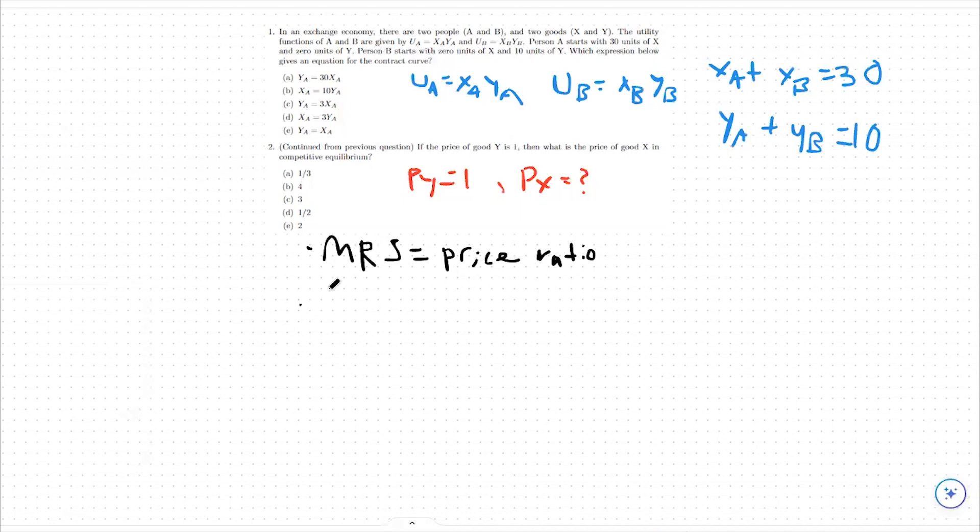So first, we're going to say our MRS for person A is again equal to yA over xA. We're just taking the marginal rate of substitution of this utility function.